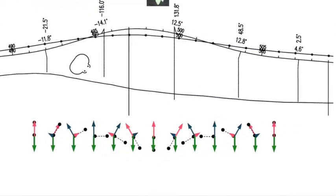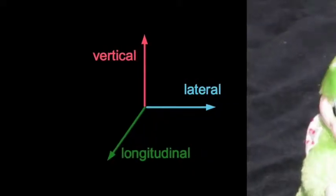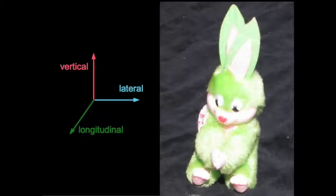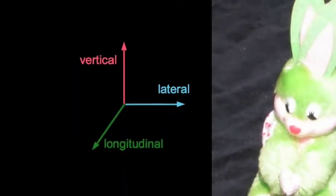In roller coaster context, vertical denotes the direction from the seat to the head of the rider, and lateral means sideways. Positive lateral forces point to the left of the rider. So our own coordinate system rotates together with us.